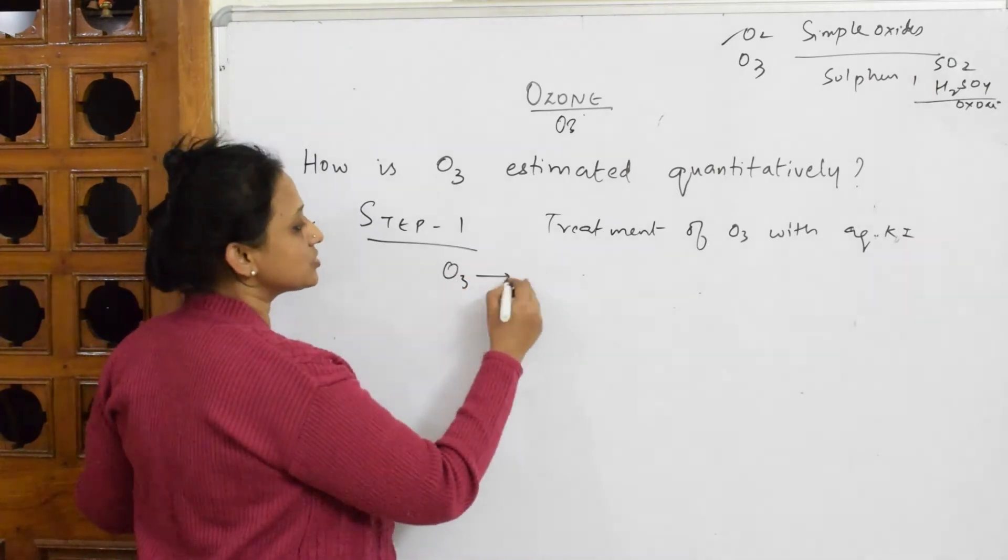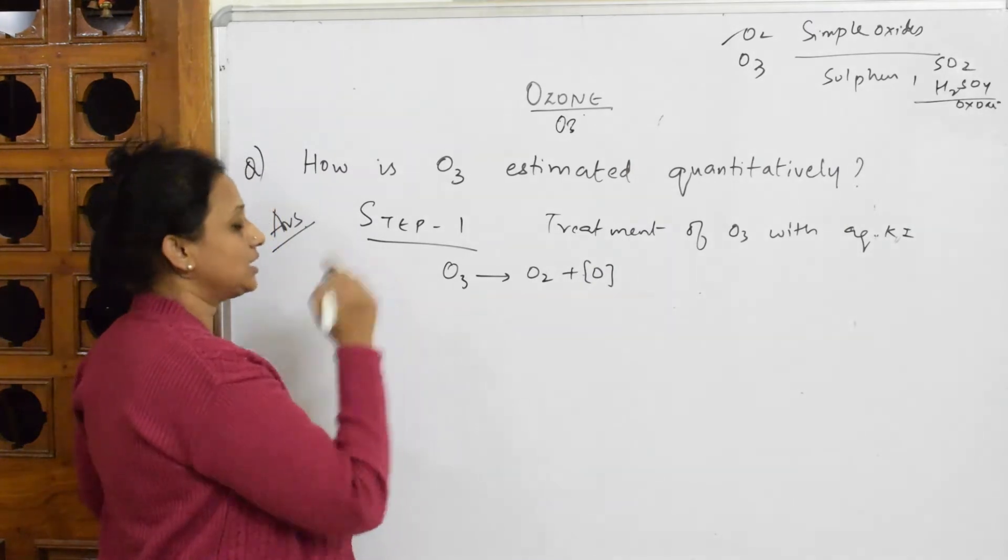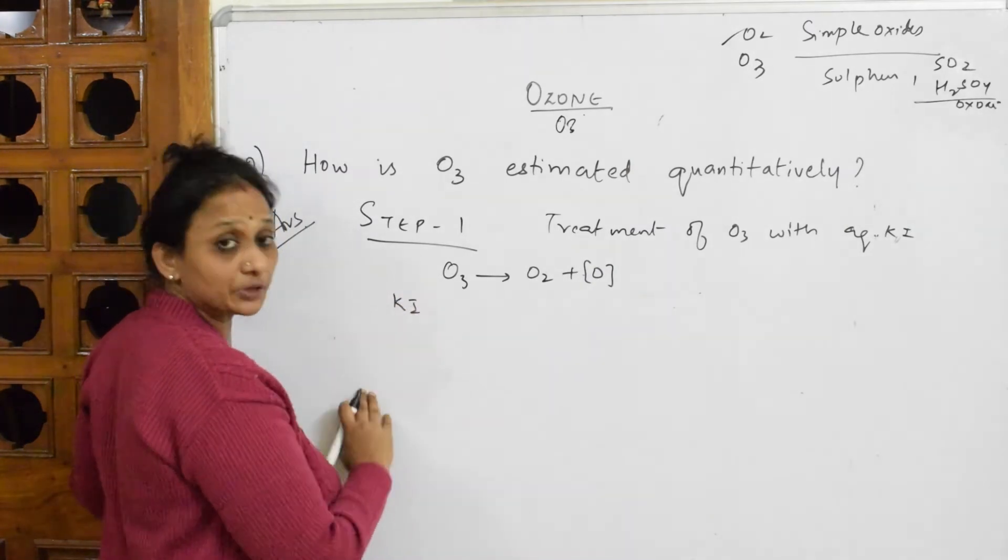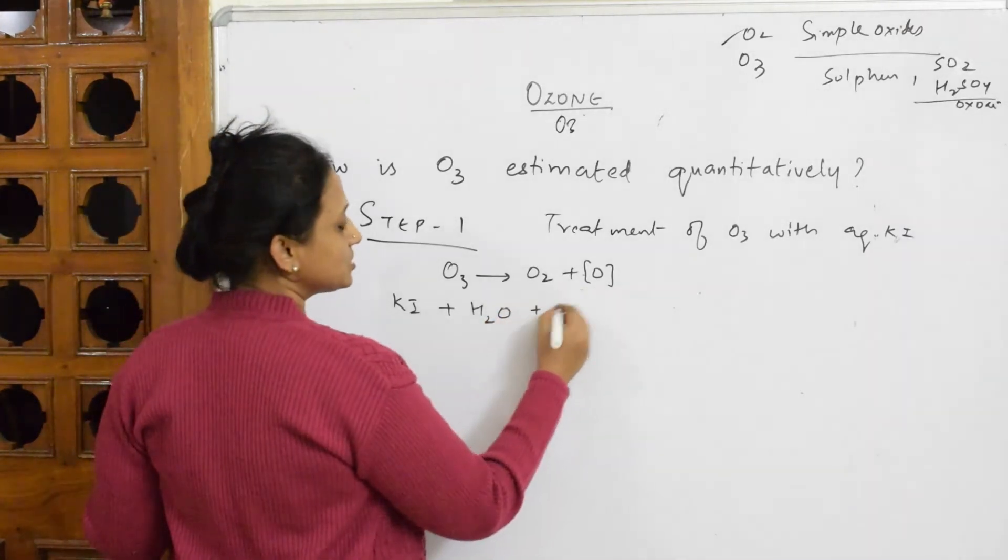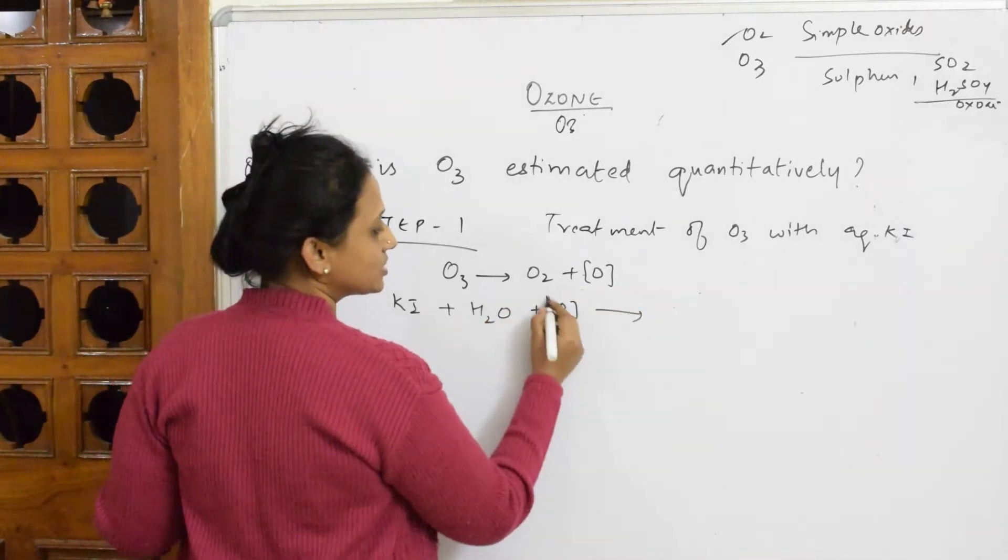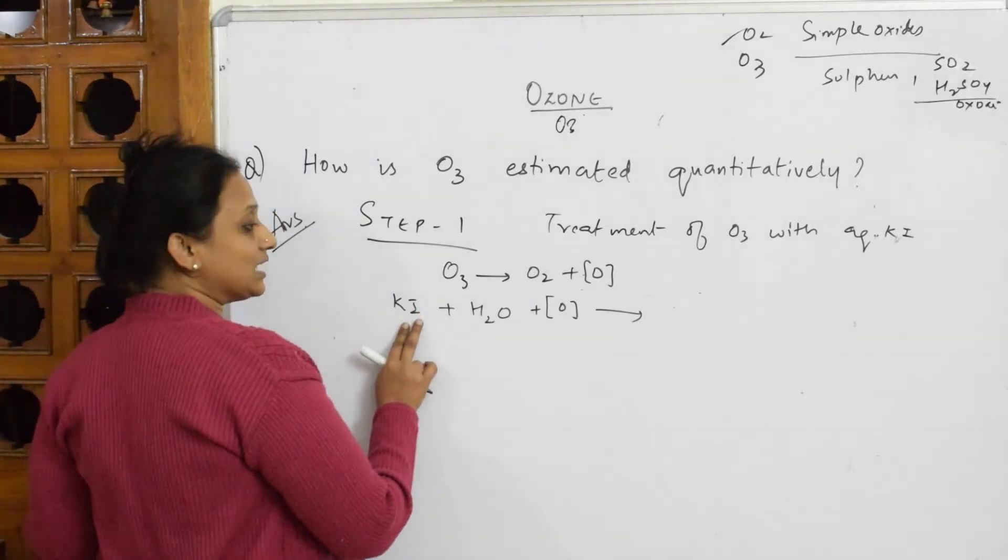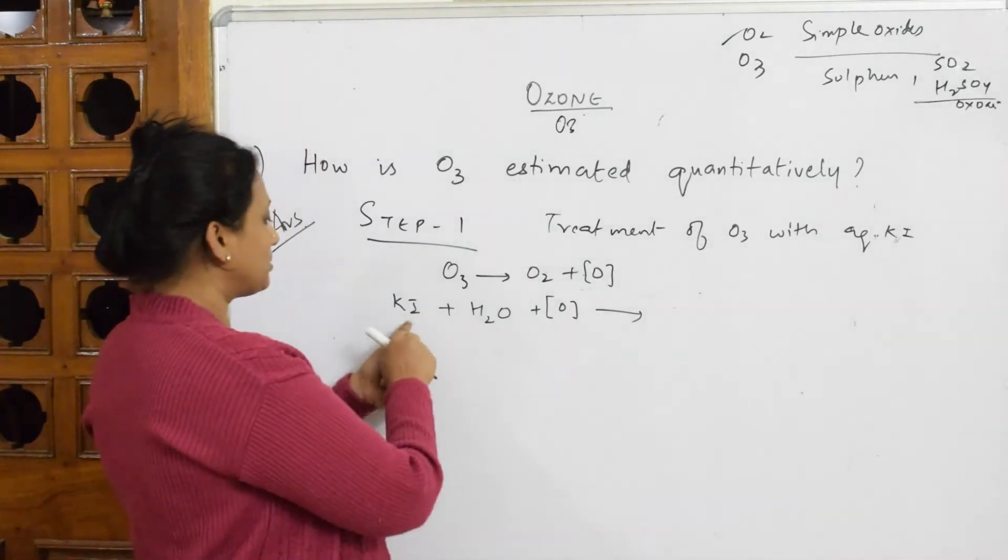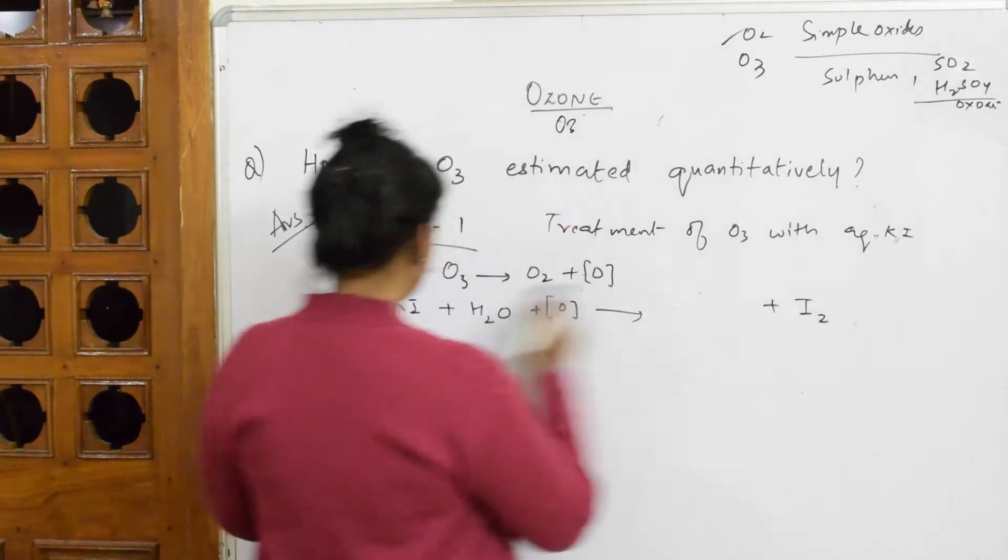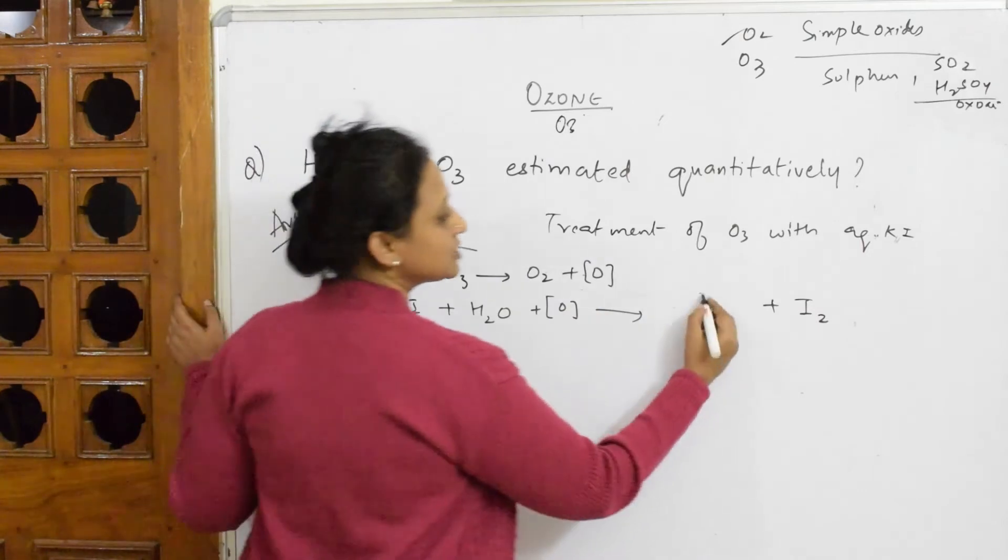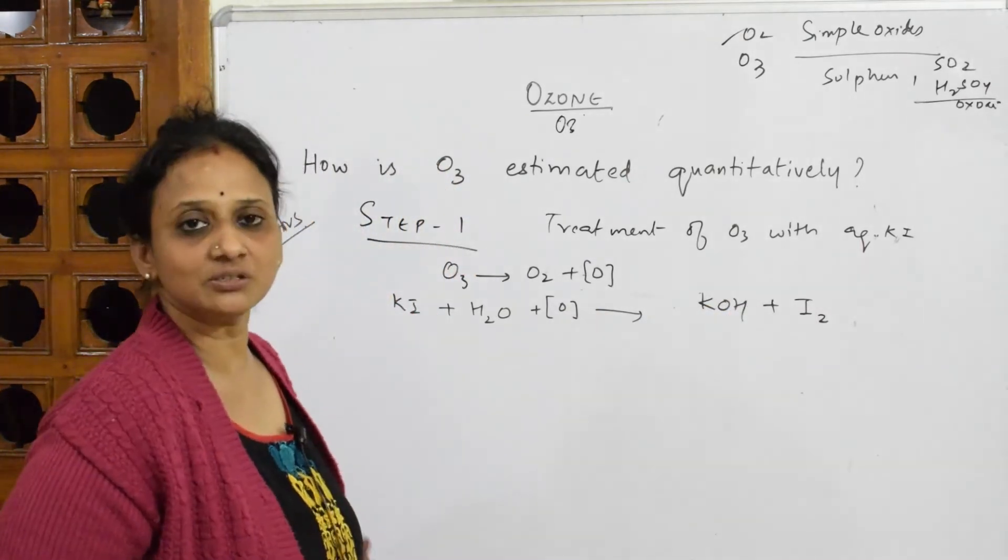We very well know ozone is going to dissociate into O₂ plus nascent oxygen. Now I'm going to take this and treat it with potassium iodide aqueous solution. This nascent oxygen, as it is there in the solution, has an oxidizing nature and it's going to convert iodides to iodine. Remember, iodide is getting converted to iodine plus potassium combines with this forming potassium hydroxide. I already showed you this reaction in the preparation of ozone.